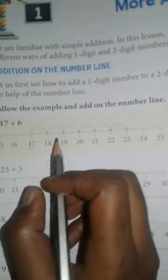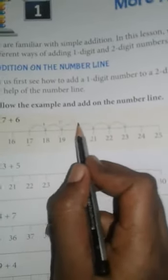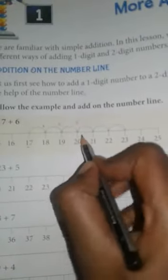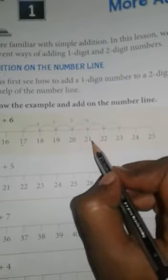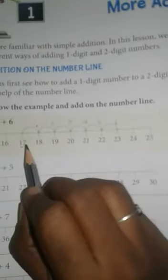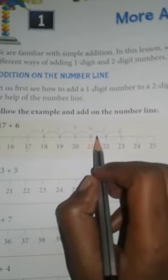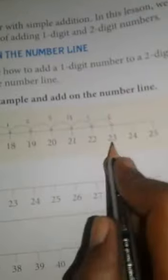Let us add 6 more numbers here. 17, plus 1, plus 2, 3, from 20 to 21 is 4, from 21 to 22 is 5, 22 to 23 is 6. So student, in 17, we added 6 numbers. So this number line ends on number 23. It means 17 plus 6 is equal to 23. 17, by adding 6 numbers, becomes 23.